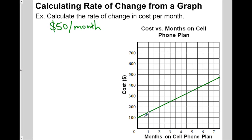That's pretty obvious from looking at this graph. However, there is another method that might work if it's not easy to see right away. This method is called the rise over run method. The way we do this is we need to pick two points along the graph — any two points — provided you can read the values easily. So this one is a good one: zero months and $100. And let's pick another point that's on a corner of the grid so you can read it easily.